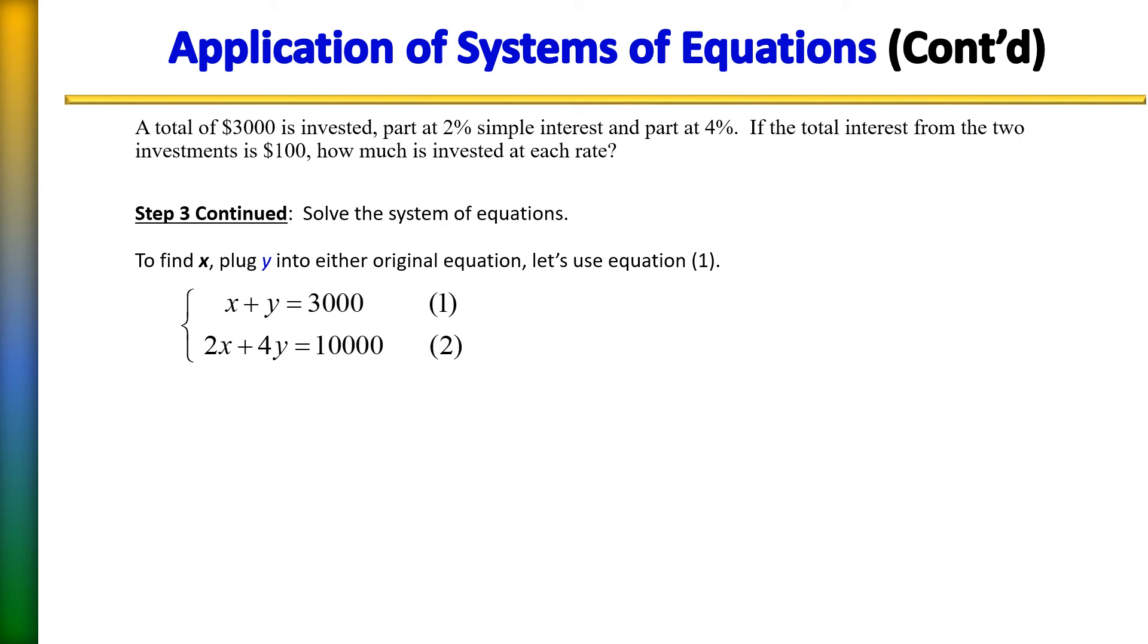So let's plug it into equation number one so we can find out what x is. When we do that, it looks like this. Last step to solving for x is to subtract 2000 from each side and x equals 1000.